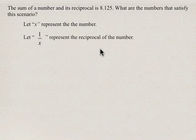We're going to let 1 over x represent the reciprocal of the first number, and we're told that the sum of the number and its reciprocal is equal to 8.125.